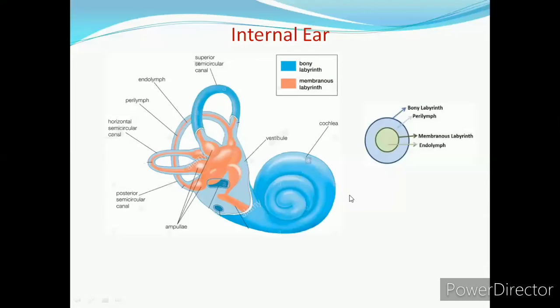And the last part of the internal ear is cochlea. It is a spirally coiled tube. Having two and half coils.